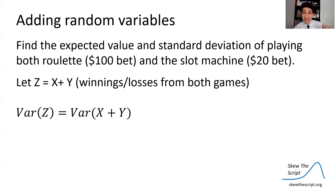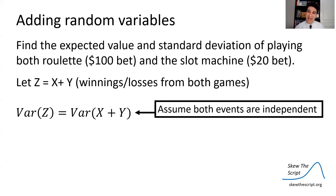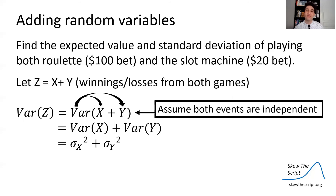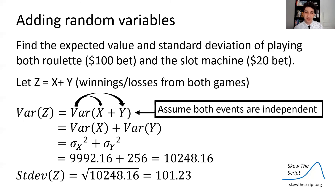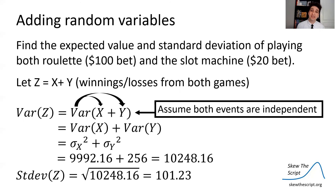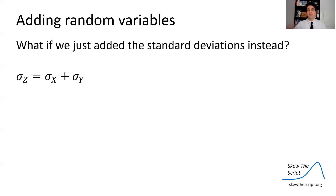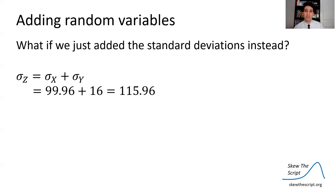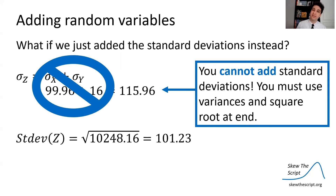For the combined variance, as long as X and Y are independent, you can add the variances: Var[X + Y] = Var[X] + Var[Y]. Square rooting gives the combined standard deviation of $101.23. Importantly, you cannot add standard deviations directly — that would give $115, which is wrong. You must add the variances first, then square root at the end. This is because of how variances are calculated with squaring and square rooting.